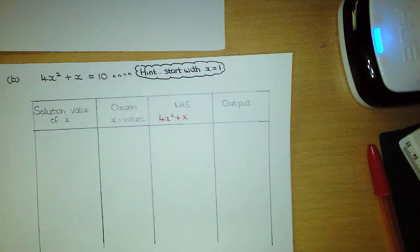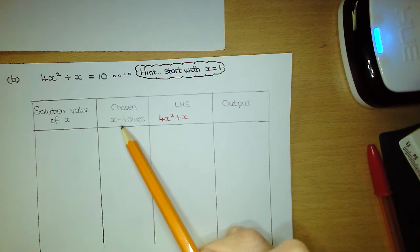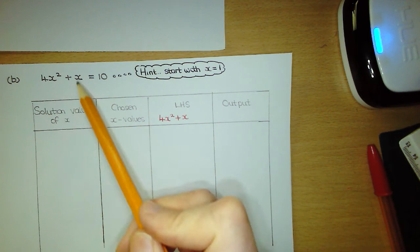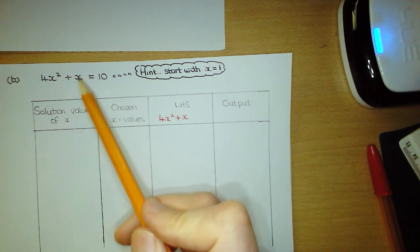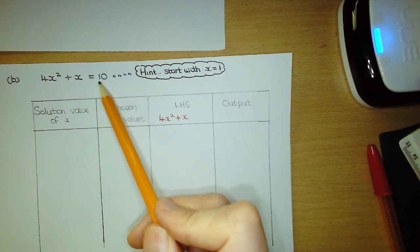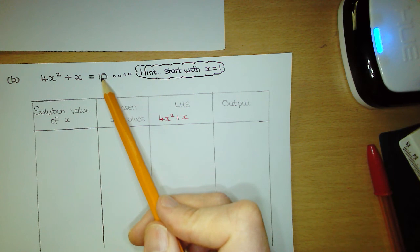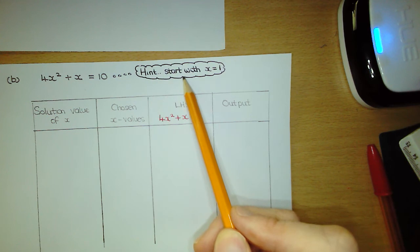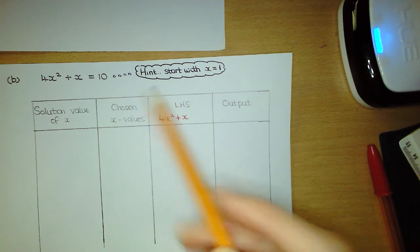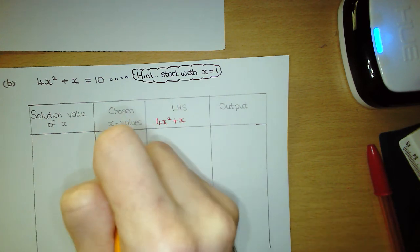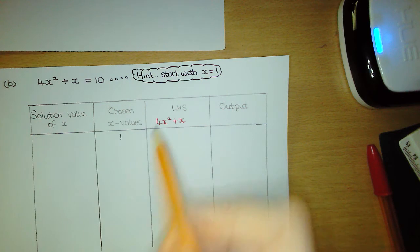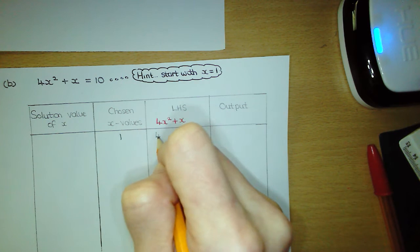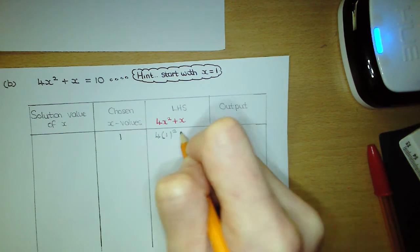We have to start by choosing two consecutive whole number x values such that when you substitute them into the left hand side of the equation, one gives an output value bigger than the target number and one gives an output value smaller than the target number. They've told us to start with x equals 1, so go to your chosen x values column, put 1 down, and replace everywhere we see x with 1 on the left hand side. So we're going to have 4 times 1 squared plus 1.